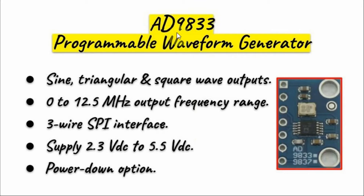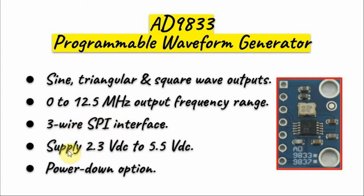The AD9833 module shown here can output sine, triangular, and square waveforms up to a frequency of 12.5 MHz. It is interfaced with a microcontroller using 3-wire SPI, and can be supplied with DC voltage ranging between 2.3 and 5.5 volts.